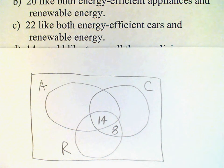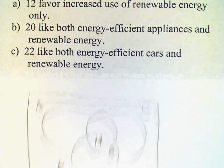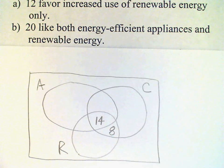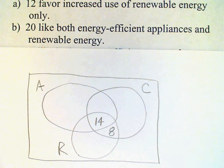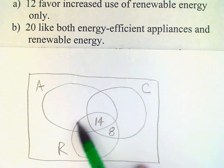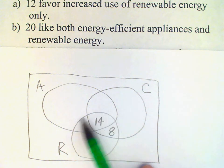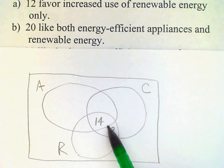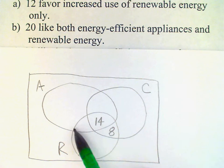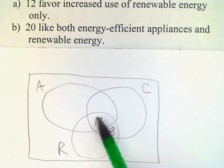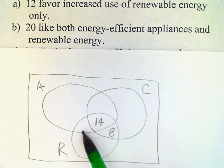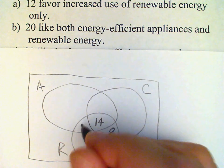Let's back up to the previous item on the list, which says 20 like both energy efficient appliances and renewable energy. So both the appliances and renewable energy would represent the intersection of those two sets, A and R. Again, 14 are in this region here, and that means that 20 minus 14 or 6 must be in here.